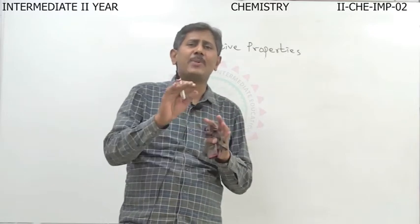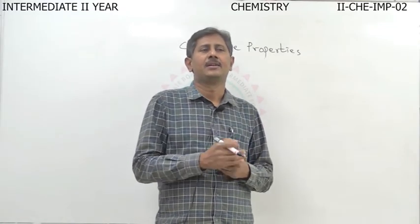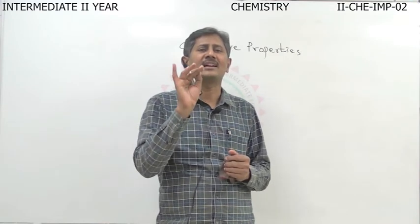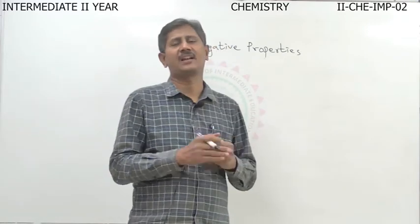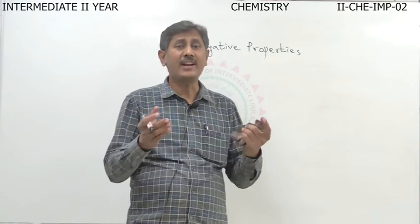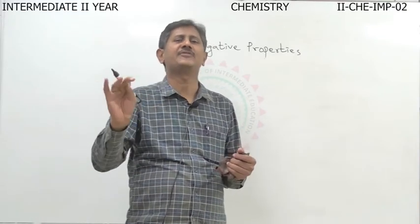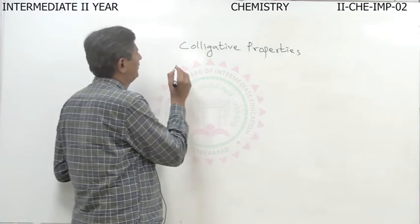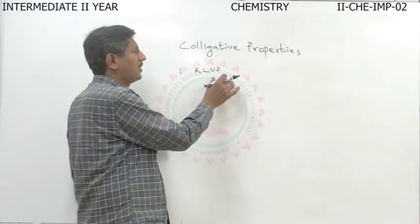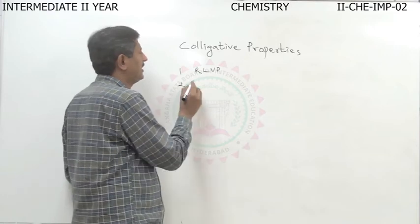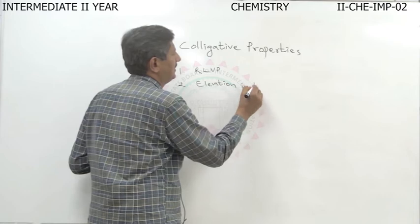The properties which depend only on the number of particles of solute are called colligative properties. These colligative properties are four: first, relative lowering of vapor pressure; second, elevation in boiling point.